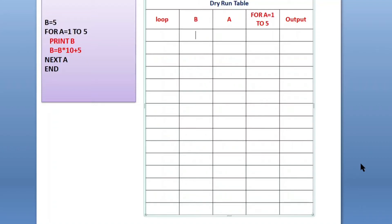Welcome back to my channel. In this video I'm going to explain how you can dry run a program and find the output. If a question is asked in the exam to find the output with dry run, you can use this method using a table. There are multiple ways to do it, but I'm trying to explain it in the easiest way.